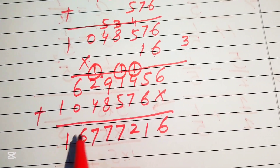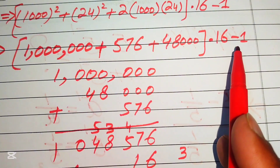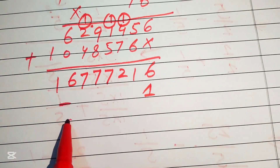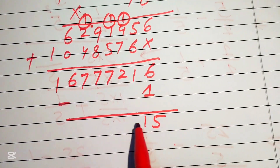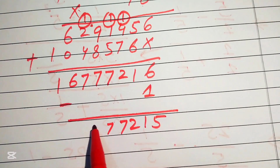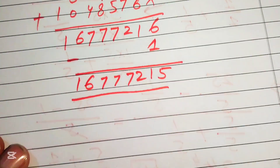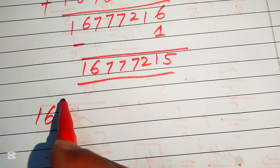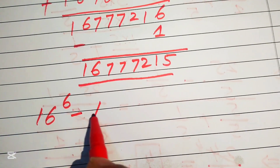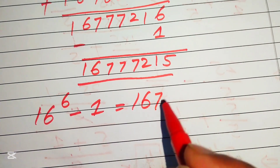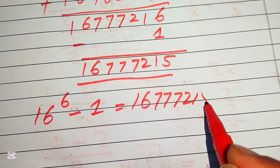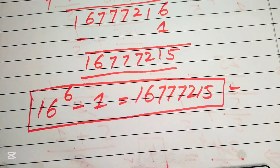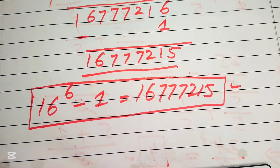Finally, we subtract 1 from that result: 16,777,216 minus 1 equals 16,777,215. So the final simplified answer is: 16 to the power of (6 minus 1) equals 16,777,215. Thank you for watching. Please subscribe to my channel for more exciting videos.